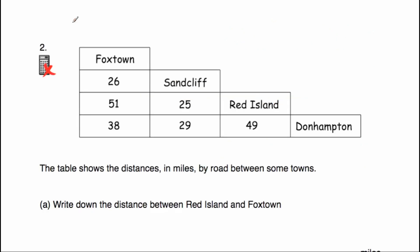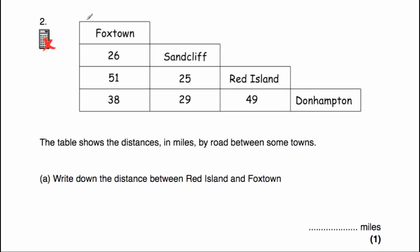Let's have a look at question number two. We've got our distance chart and we've got some towns that I've made up: Foxtown, Sandcliffe, Red Island and Donhampton. The table shows the distances in miles by road between some towns. For instance, Foxtown and Sandcliffe are 26 miles apart and so on.